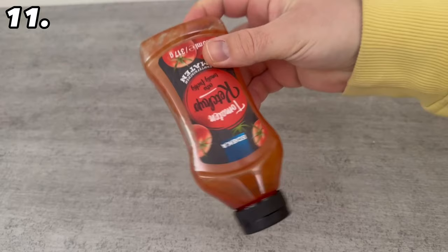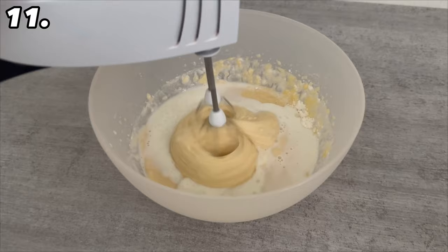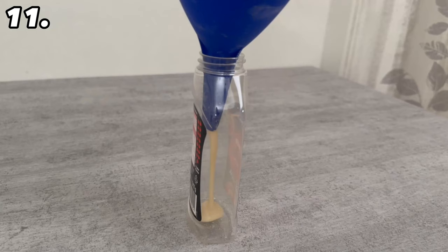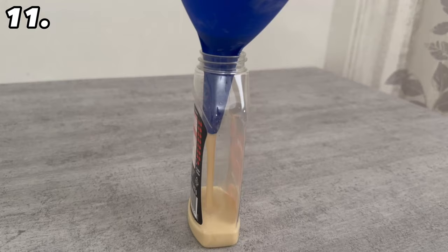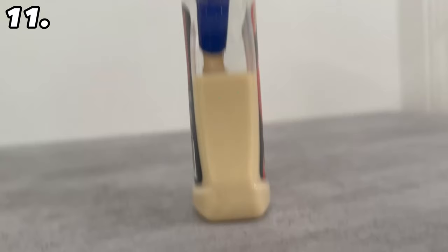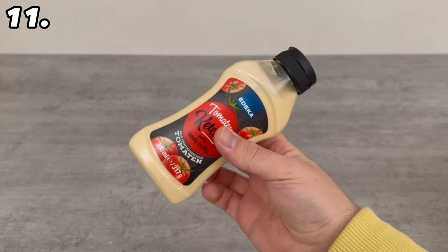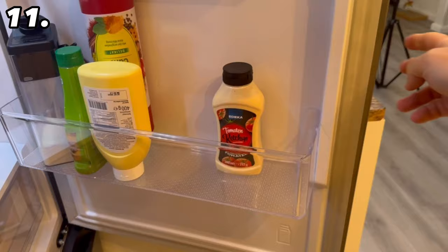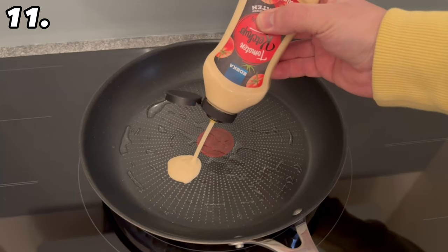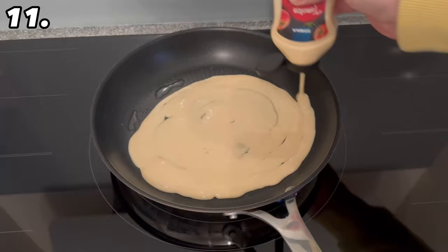If you have an empty ketchup bottle, you should never throw it away. Instead clean it thoroughly inside. If you're making pancake batter, you can fill it into the empty ketchup bottle. This has two advantages right away. The first advantage is that you can now perfectly store the pancake batter in the fridge. So if you've made a bit too much, you can store it for much longer.